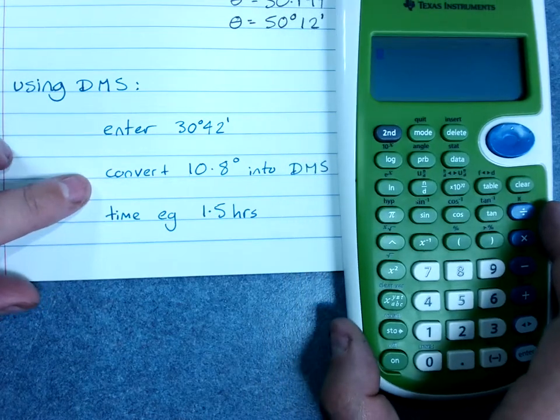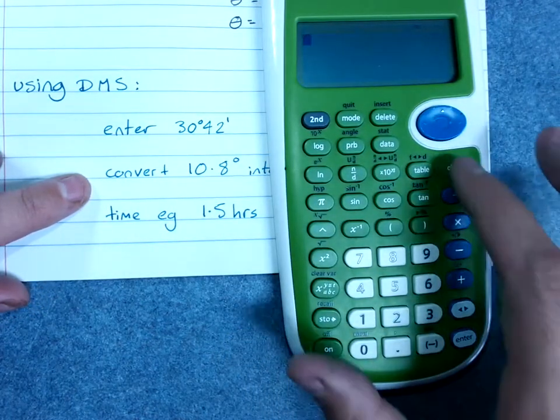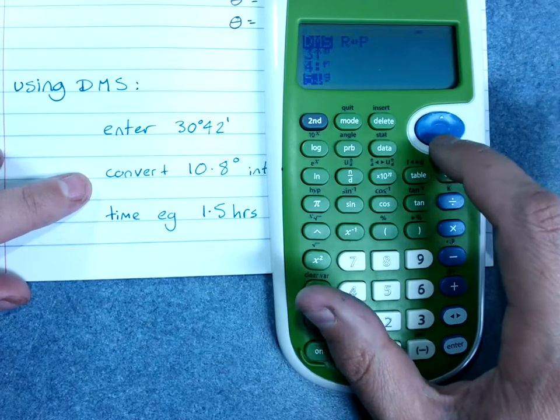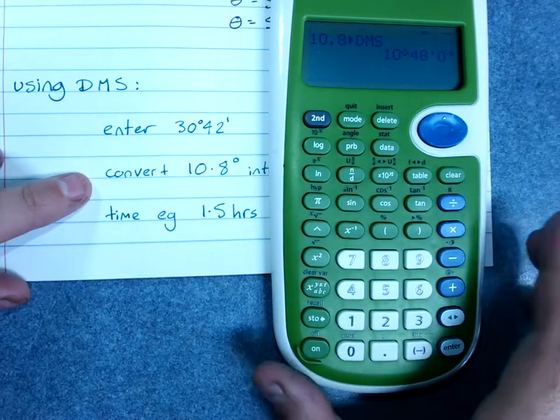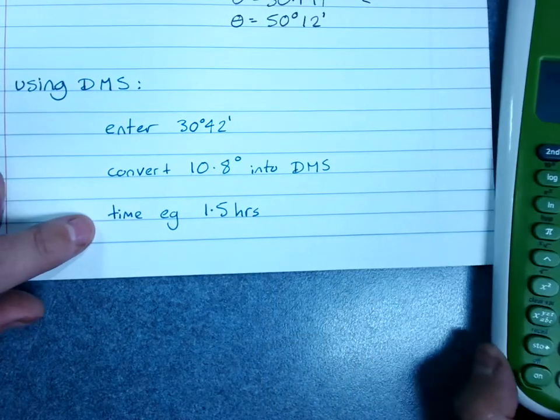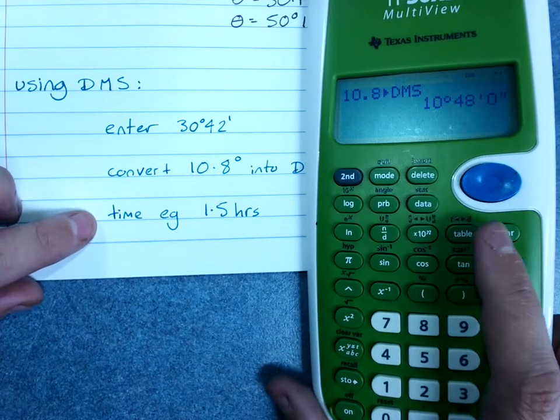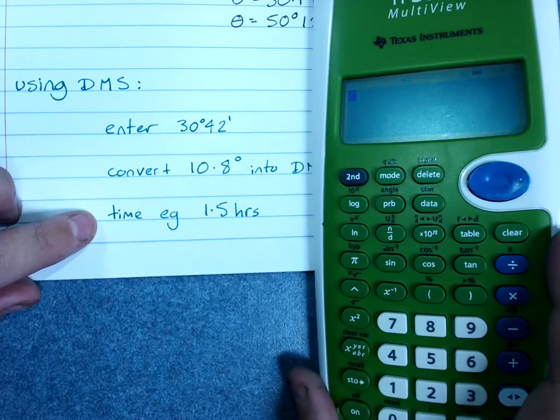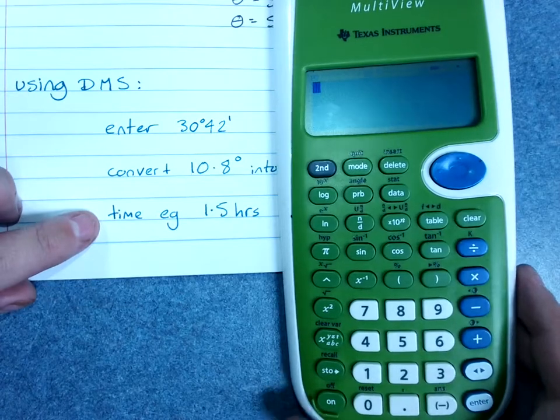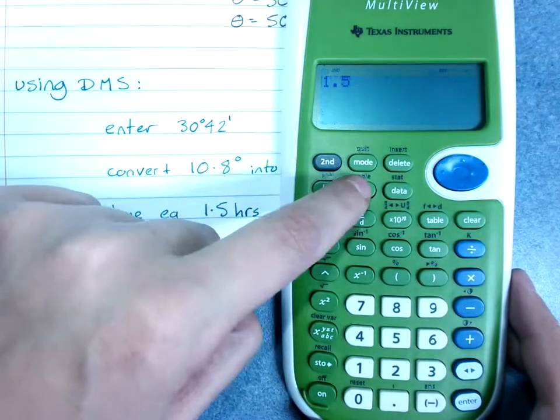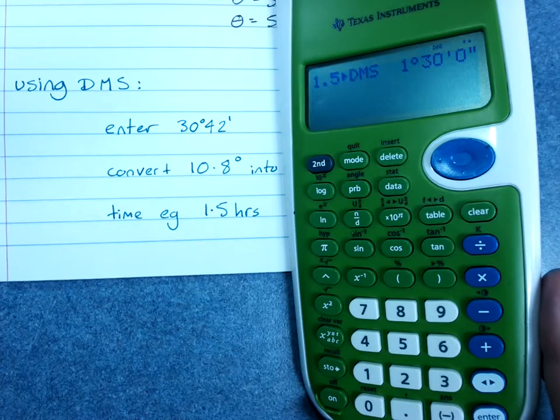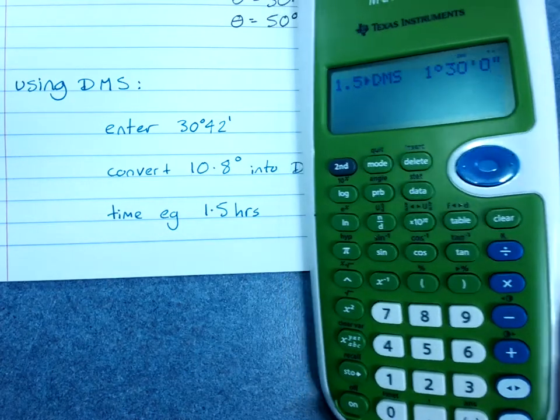To convert a decimal into degrees, minutes, seconds: 10.8 degrees, second function angle, and DMS. 10 degrees, 48 minutes. Just as an aside, you don't need this for trig, this works for time as well. If you're given a decimal answer of time and you want it in hours, minutes and seconds, 1.5 hours would be 1 hour 30 minutes. So if you do 1.5, second function and DMS, you'll get, just pretend you're reading an hour instead of degrees, 1.5 hours would be 30 minutes. So it's quite useful for time.